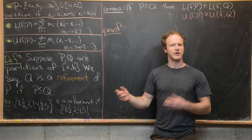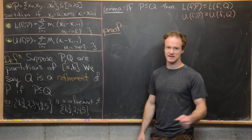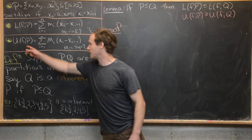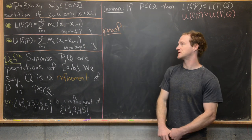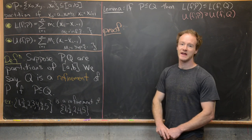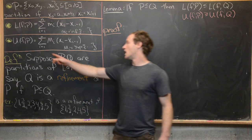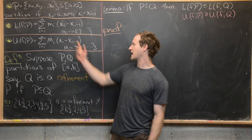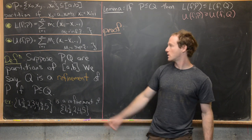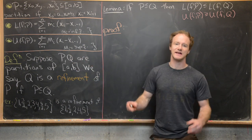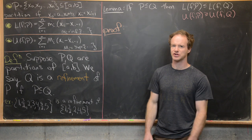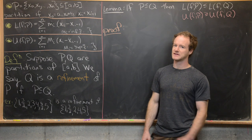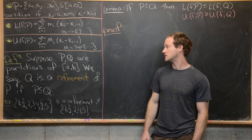You can check out the last video for the full definition. Similarly, U(f,P), the upper sum of f with respect to P, is the sum from i=1 to n of Mᵢ times (xᵢ minus xᵢ₋₁), where Mᵢ is the supremum of f over those sub-intervals. We did an example in the last video.